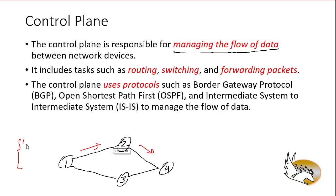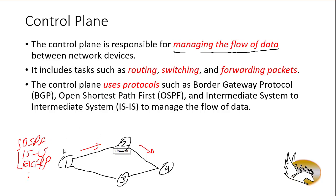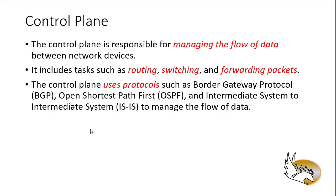Most of the time the control plane uses protocols like OSPF, ISIS, or EIGRP. All of them are protocols that decide how we are going to send data, through what link, to what destination — all examples of the control plane. The control plane also has specific data related to itself: OSPF sends hello messages, ISIS and EIGRP do the same, and they keep adjacency information and databases. Whenever we talk about control plane, we mean how we control the flow of data.